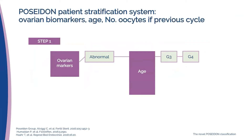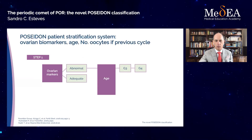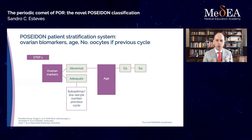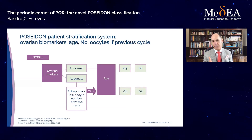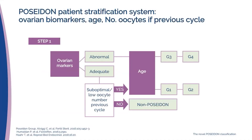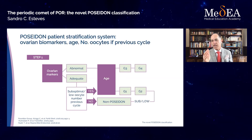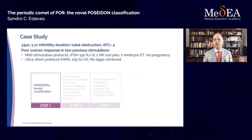If the ovarian markers are abnormal according to age, the patient is classified as group three if below 35, or group four if 35 or above. If ovarian markers are normal and the patient has had a previous conventional stimulation with low — less than four — or suboptimal — between four and nine — oocytes retrieved, the patient is classified as group one if below 35, or group two if 35 and above. Patients with no previous stimulation and adequate markers are non-Poseidon, but may be reclassified after their first cycle if they respond suboptimally.